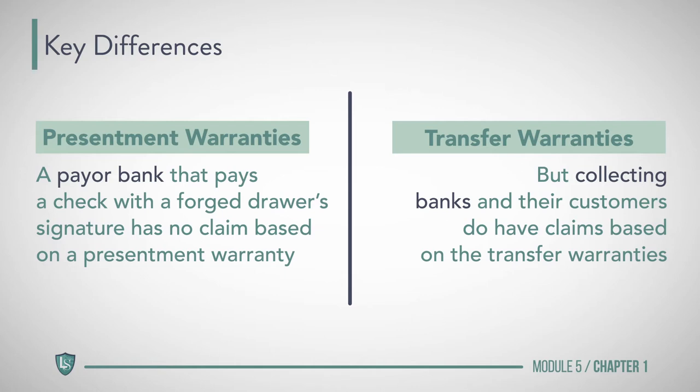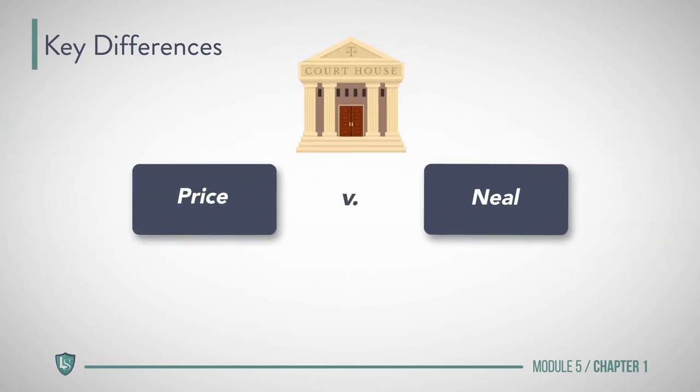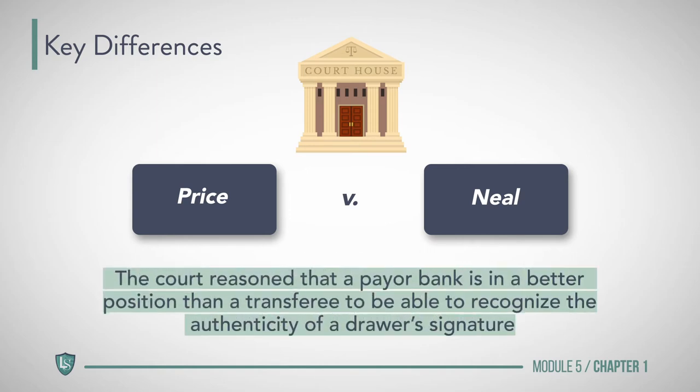The challenge, of course, is finding a solvent and responsible party against whom the claim can be made. The rationale behind this rule dates to the 1762 case Price v. Neal, where the court reasoned that a payer bank is in a better position than a transferee to recognize the authenticity of a drawer's signature.